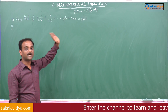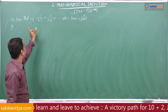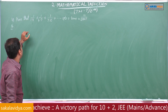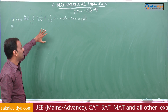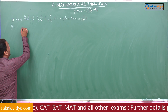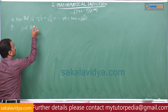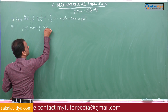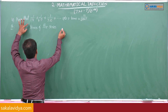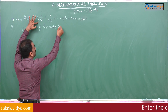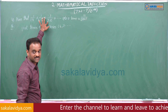In the nth term, the denominator has two parts. First, we check whether the terms are in AP or GP. The first terms of the series are 1, 4, 7, and so on.